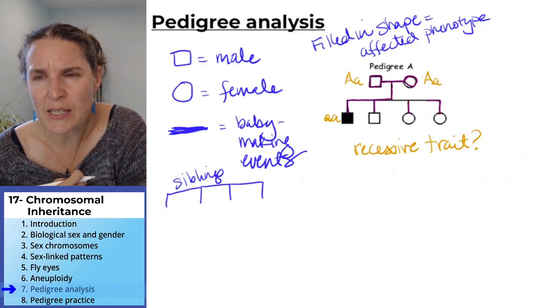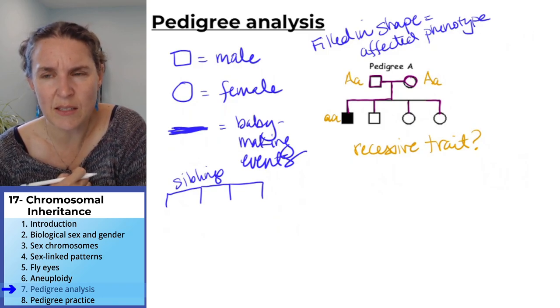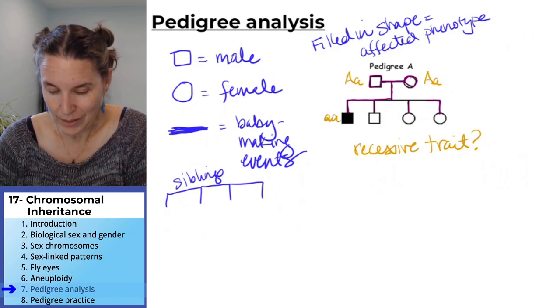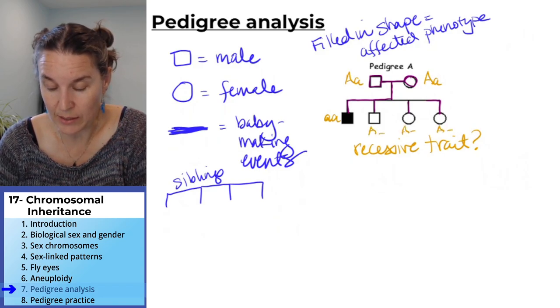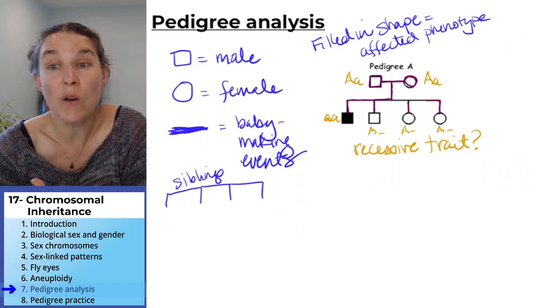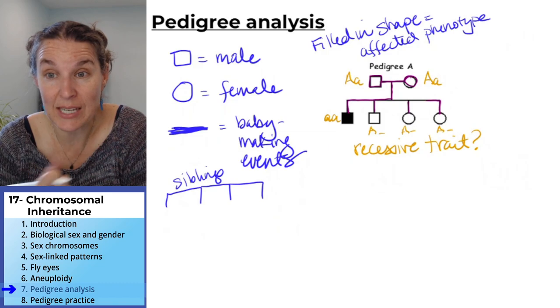Is it possible that none of the other kids would get the trait? Totally. I mean, they could, all of them have to get at least one dominant allele. And who knows? They could get two dominant alleles. That would work because they have a dominant allele to get from each parent.